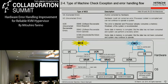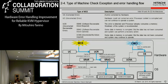This slide shows the type of machine check exception and error handling flow. Correctable error means an error corrected by hardware. UC means hardware couldn't correct an error, processor context is corrupted and the system cannot continue to operate. UCR has three types: SRAO, SRAR, and UCNA.